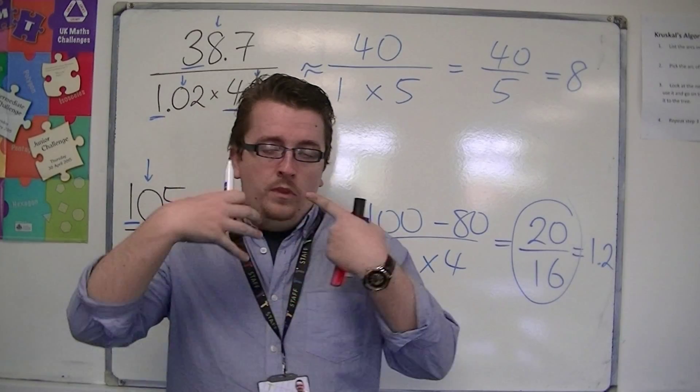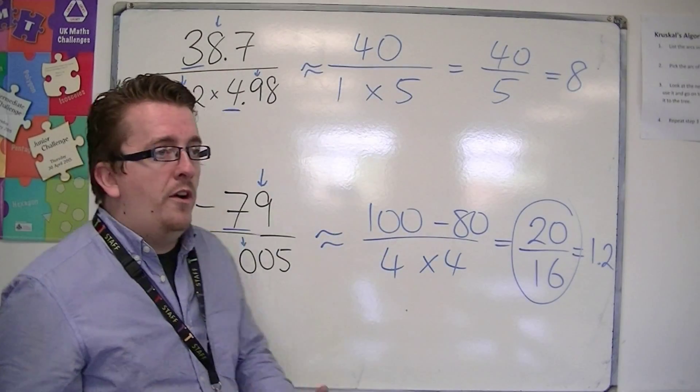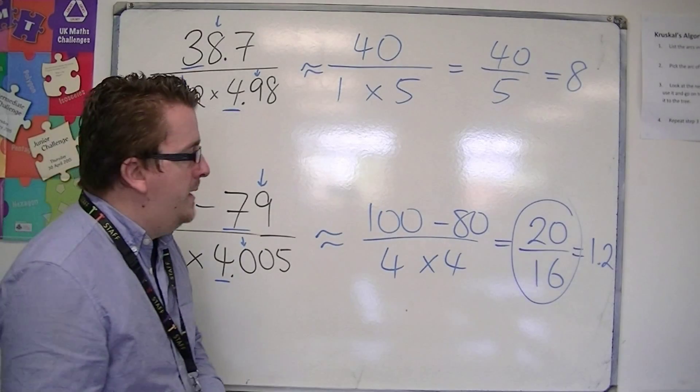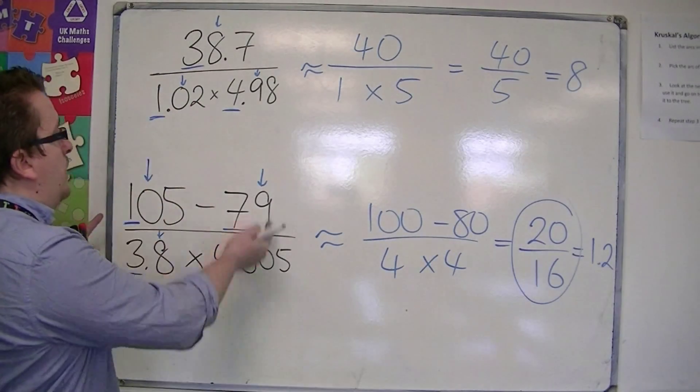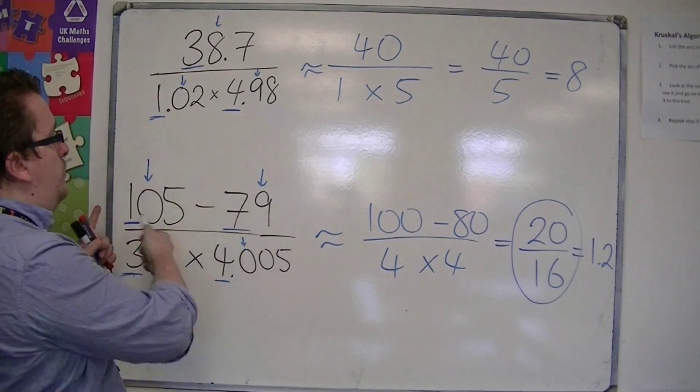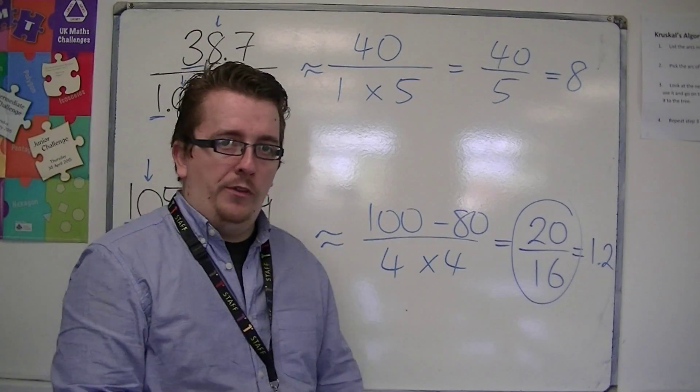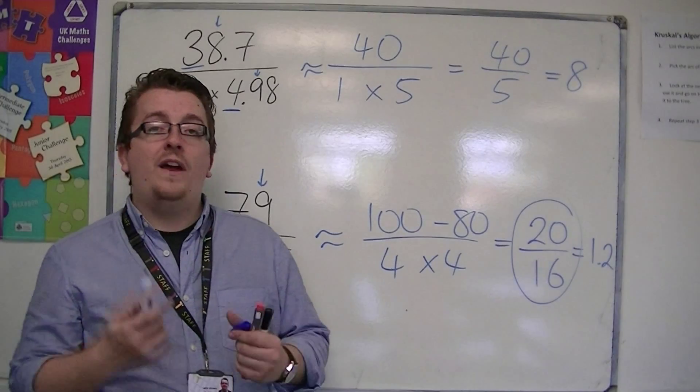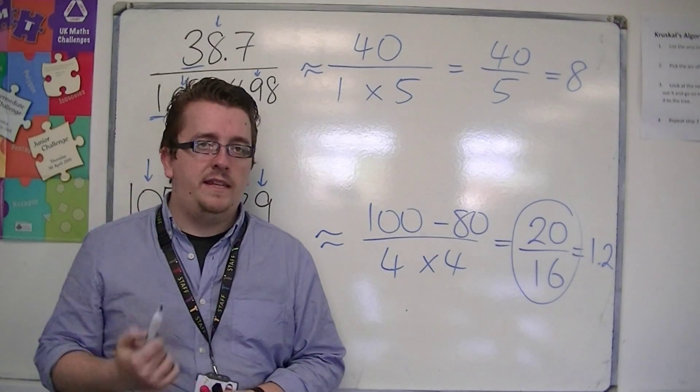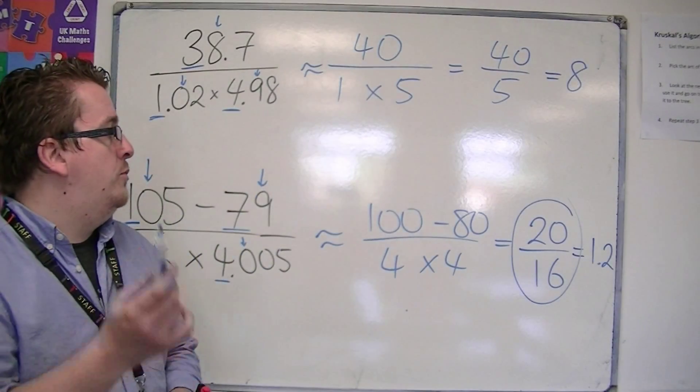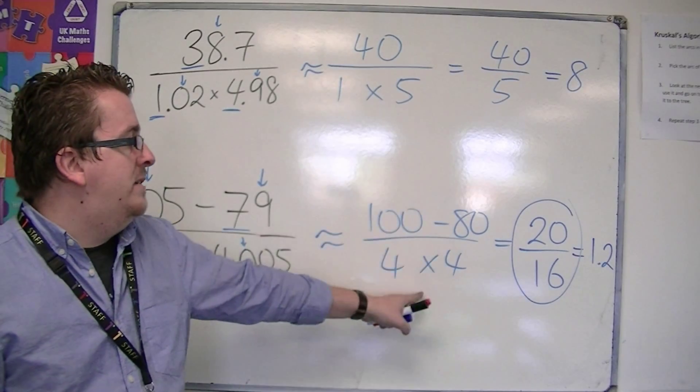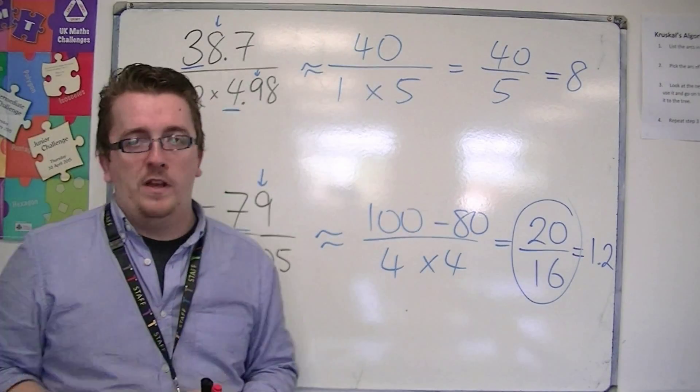So these are the type of calculations that you are expected to be able to do. So if you're given a fraction like this, do the top and do the bottom, and then do top divided by bottom. That's actually BIDMAS working in the background, making sure you do the bracketed bits, the top and the bottom are bracketed, doing those first.